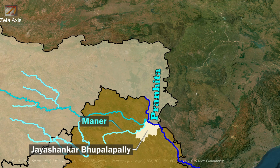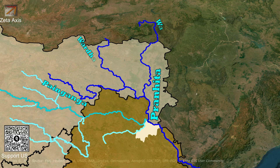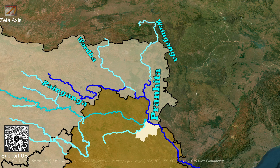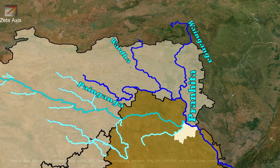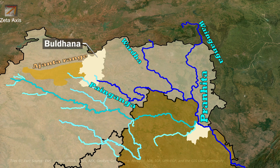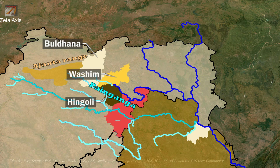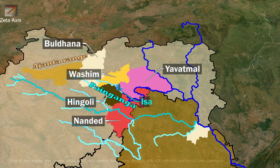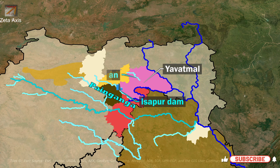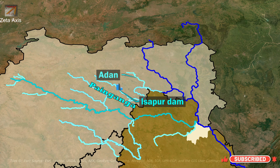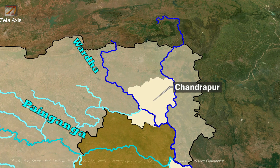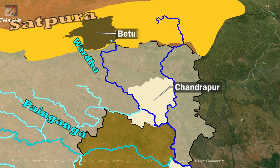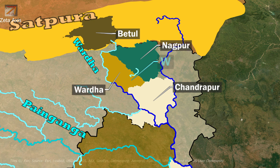The Pranahita River is a combined stream of three rivers: Penganga River, Wardha River and Wainganga River. The Pranahita River begins at the confluence of Wardha and Wainganga Rivers, on the border of Maharashtra and Telangana. Penganga River originates in the Ajanta Ranges in Buldhana district in Maharashtra, passes through Washim, Hingoli and Nanded districts, and finally Yavatmal district where Isapur Dam is constructed on Penganga. Adhan River meets Penganga in Yavatmal. Penganga finally merges with Wardha River in Chandrapur district of Maharashtra. The Wardha River originates in the Satpura Ranges in Betul district of Madhya Pradesh, enters Maharashtra in Nagpur district, flows through Wardha district where Wunna River joins Wardha, and then enters Chandrapur where it meets Penganga.